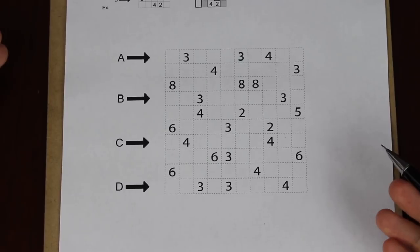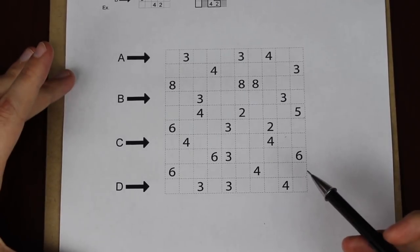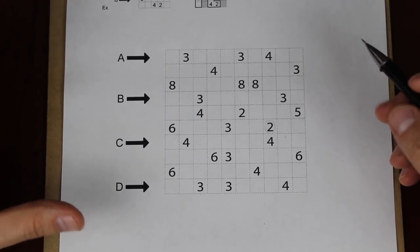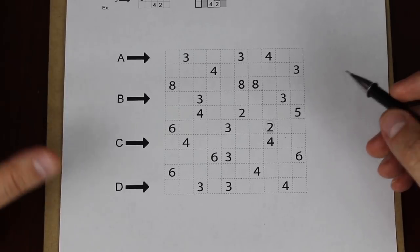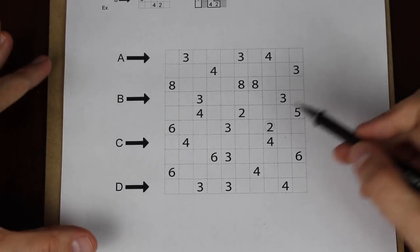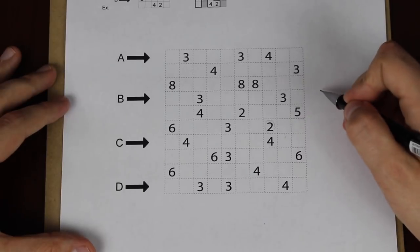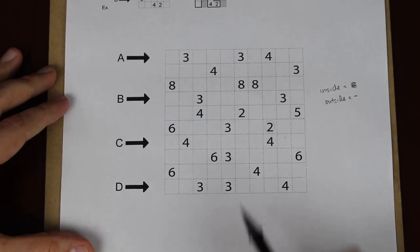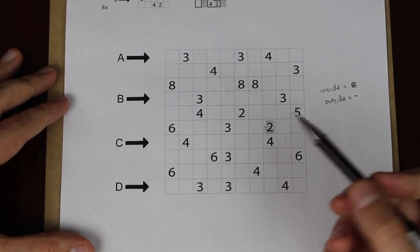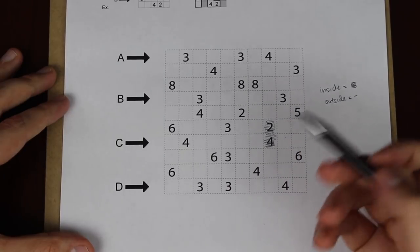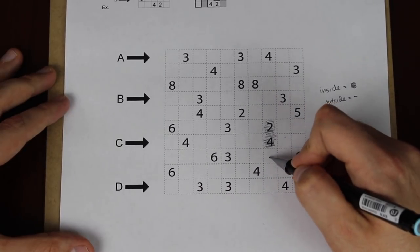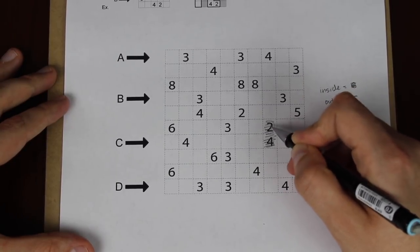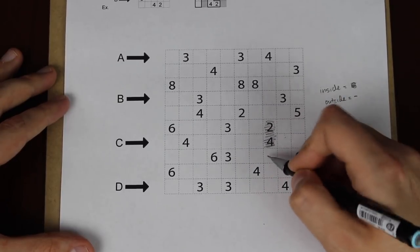One way that you can start solving cave puzzles is by looking at small numbers. For example, we have this two here. Now I'm going to use my own notation, which is a little bit different than what you might want to use for speed solving, but which I think is going to make this a little bit easier to see. When something is inside the loop, I'm going to shade it. And when it's outside, I'm going to use a minus sign. So here, this two is going to be inside the loop because it's a number, and this four is also going to be inside the loop because it's also a number. And that tells us that this two is already filled. This cannot be shaded, or it would see three squares. That can't, that can't, and that can't.